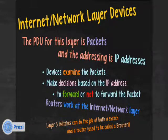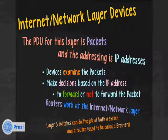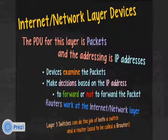Layer 3 switches can do the job of both a switch and a router. They can examine IP packets, look at the addresses, and act like a router — or they'll look at a frame, examine the physical address, and work like a switch. We used to call this a brouter — a bridge router — but we don't hear that term anymore. Now we call it a layer 3 switch.